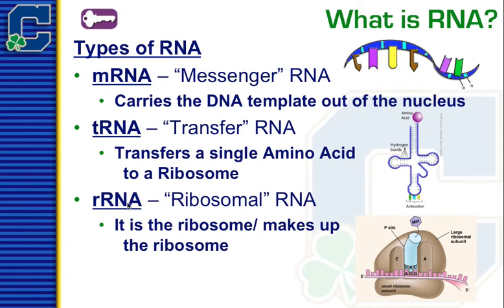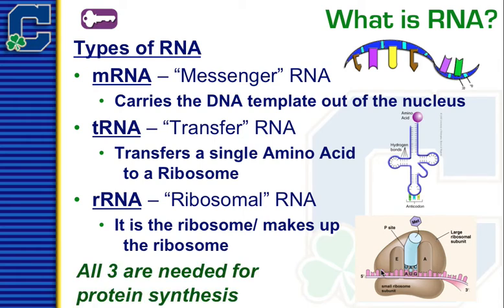The third type is called rRNA — ribosomal RNA. It actually makes the ribosome. Remember ribosomes don't have a membrane because they're just made of coiled-up RNA. One section of RNA makes the large subunit and another section makes the smaller subunit, so it's two RNA sections that make up the ribosome. But again, all three types are needed for protein synthesis.